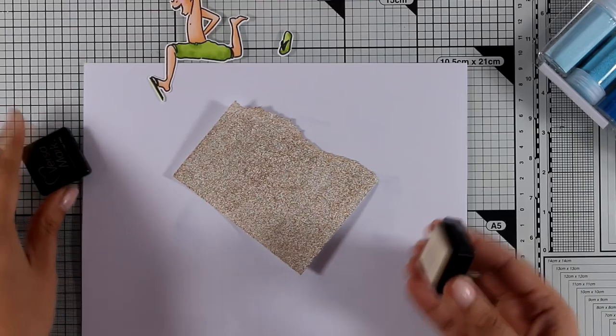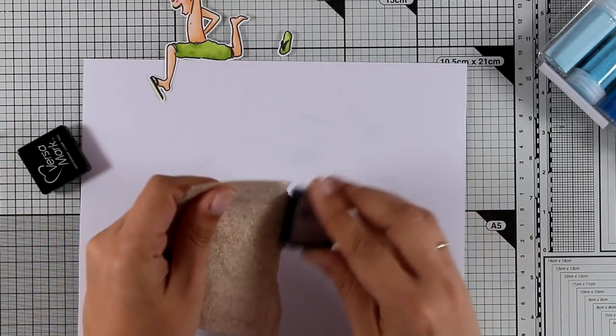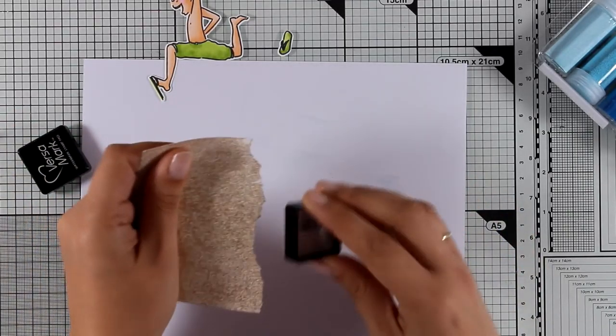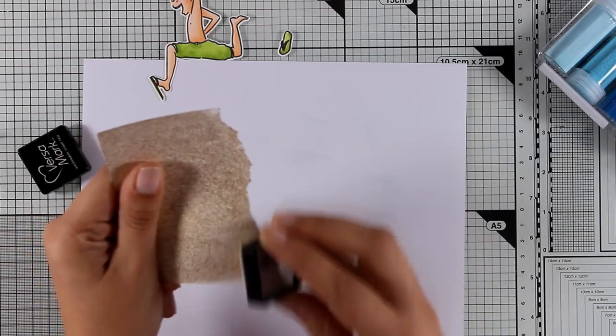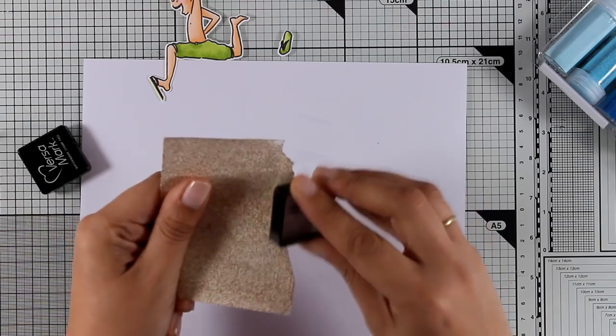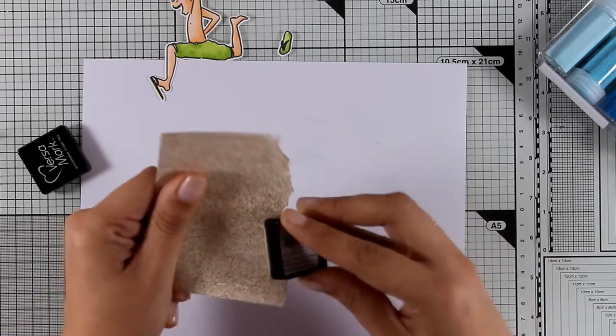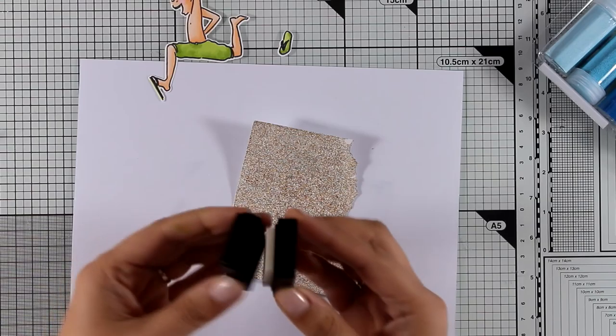Now I'm going to use an ink cube - this is Versamark - and I'm going to go around the edges. Of course you can use the bigger Versamark if you have that. I just find it easier for me since I can control where I apply ink with a smaller ink cube better. I'm going to make sure that all the edge is nice and moist.